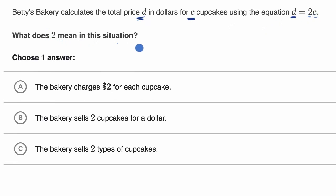Pause this video and see if you can answer that. Before I even look at the choices, let me interpret this. d equals 2c tells us that however many cupcakes someone buys, we multiply that times two to get the amount of dollars, the price that they need to pay. So this must mean that each cupcake is $2, or that it's $2 per cupcake, because however many cupcakes we get, we multiply that by $2 per cupcake to get the actual price.